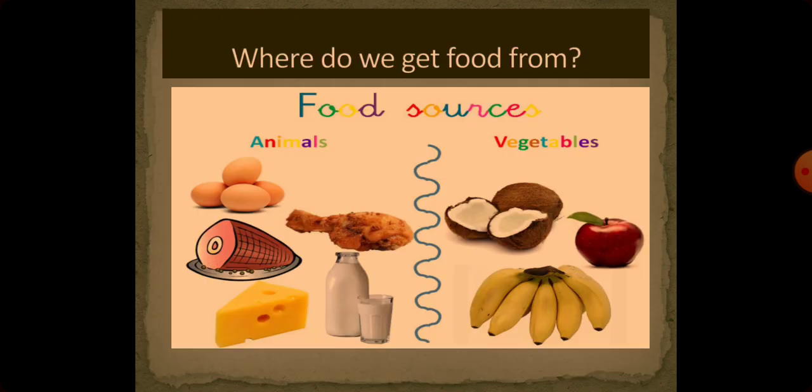Do you know from where do we get food? We get food from animals and plants. Here we can see some food items that we get from animals, like eggs, chicken, milk, and cheese, and some food items that we get from plants, like fruits and vegetables.